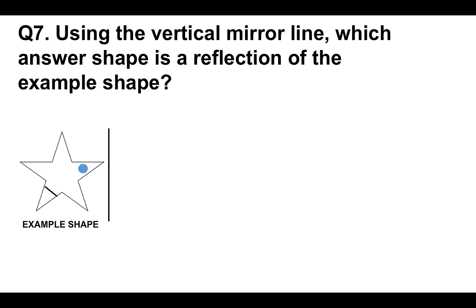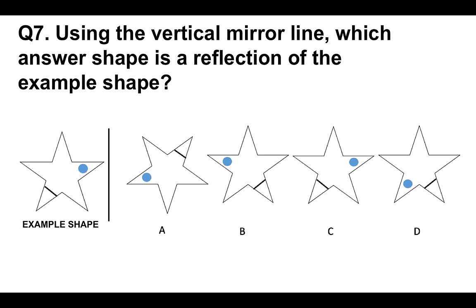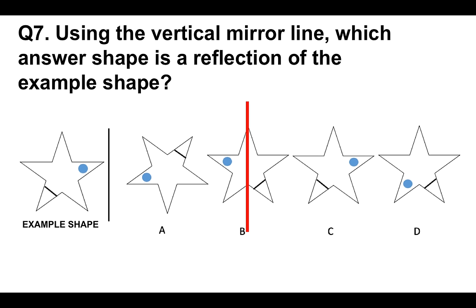Question number seven — this is a different kind of non-verbal reasoning test question. Using the vertical mirror line — I'll show you what that is in a second — which answer shape is a reflection of the example shape? You've got the example shape there on the left, and then the answer shapes A, B, C or D. That is the vertical mirror line. We look at the example shape and then look at it in the mirror and decide which one is the correct answer. It's quite obvious — if we draw a line there in B, we can see that it is a direct reflection of the example shape. Therefore, the correct answer is B.